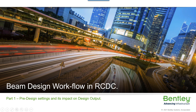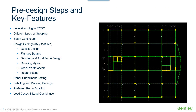In this video, we will cover different types of grouping that are possible in RCDC. Also, different design settings that can be made in RCDC so as to get and handle the design output. Then there are different curtailment settings available, the detailing and drawing settings, the preferred bar spacing, and how we can set the load cases and load combinations that we need to use for the design.